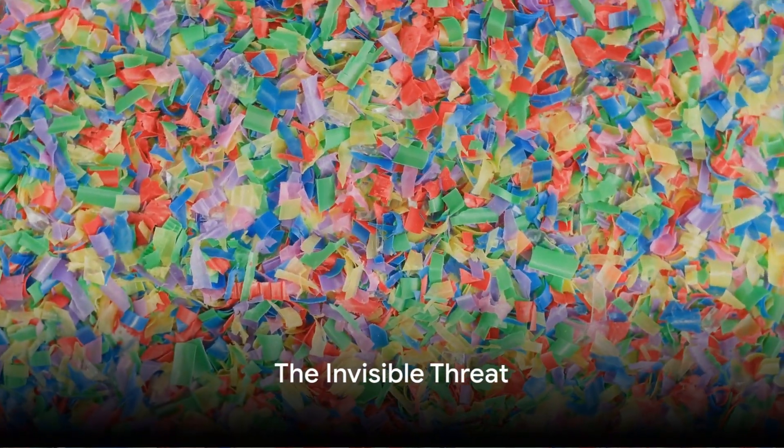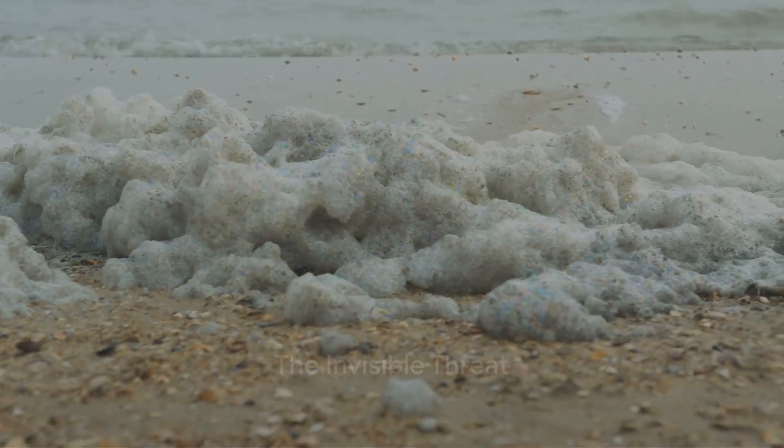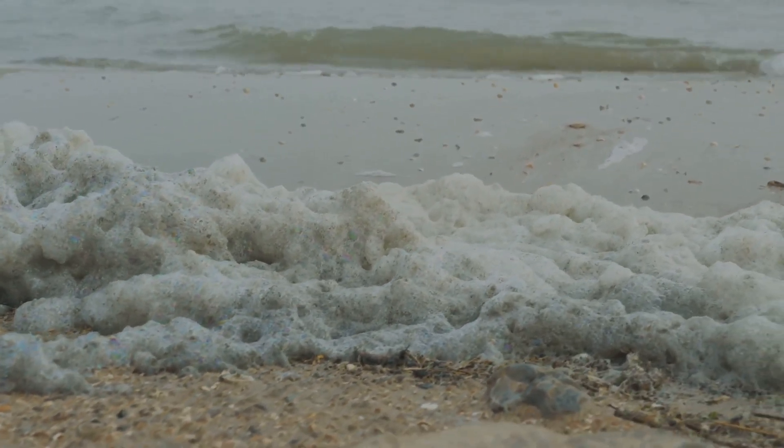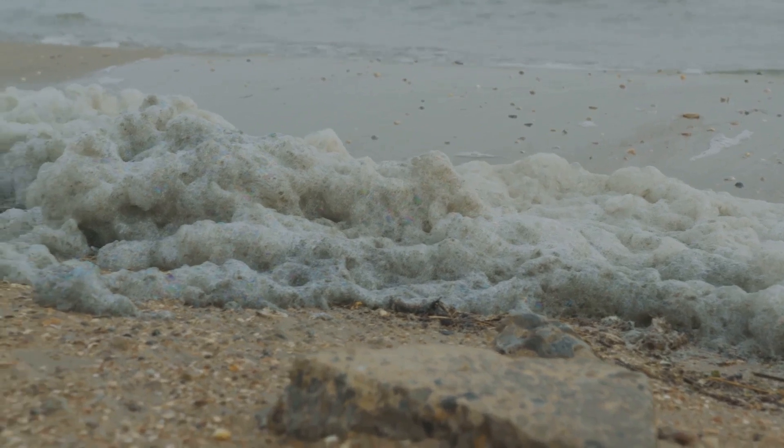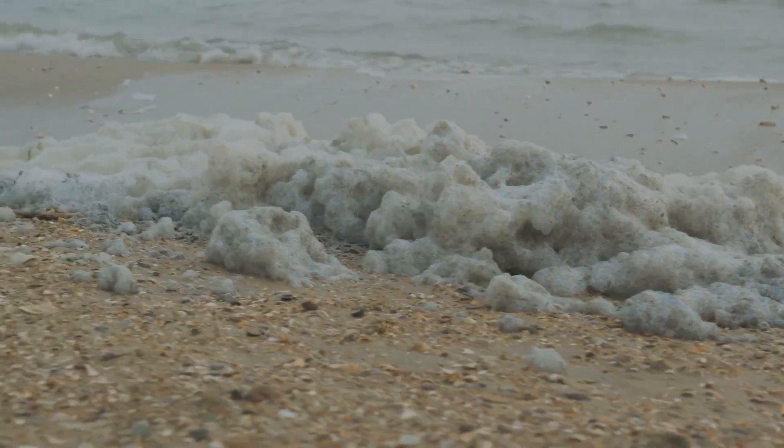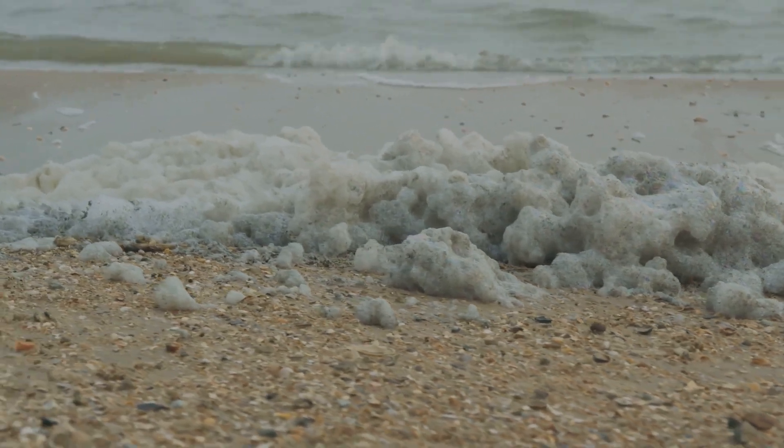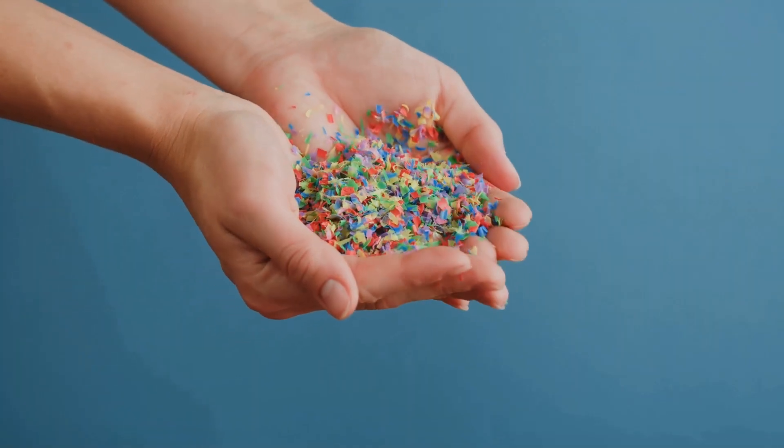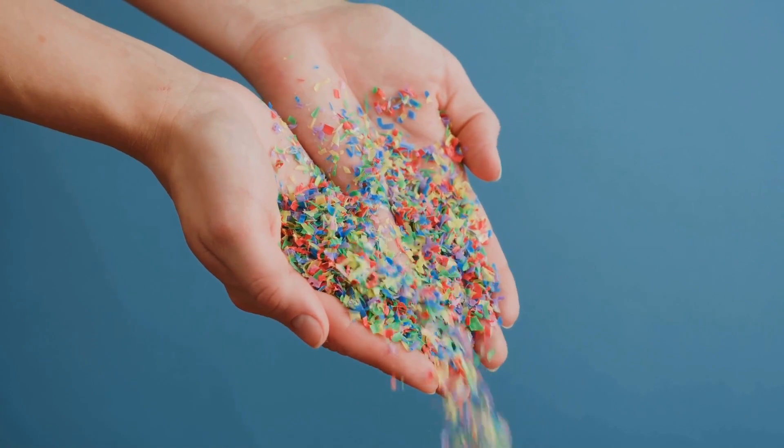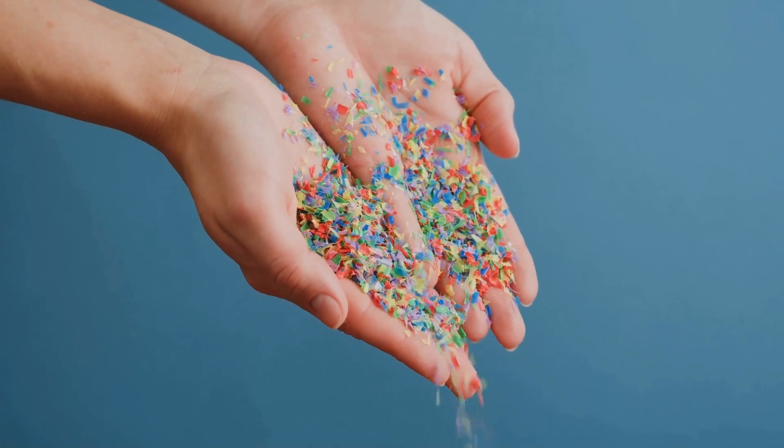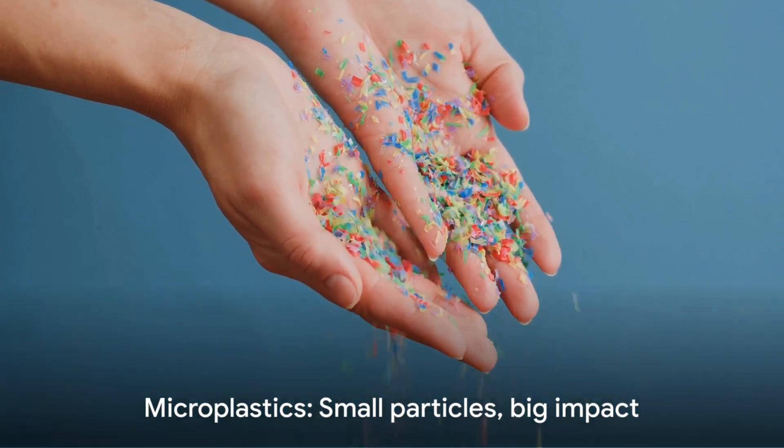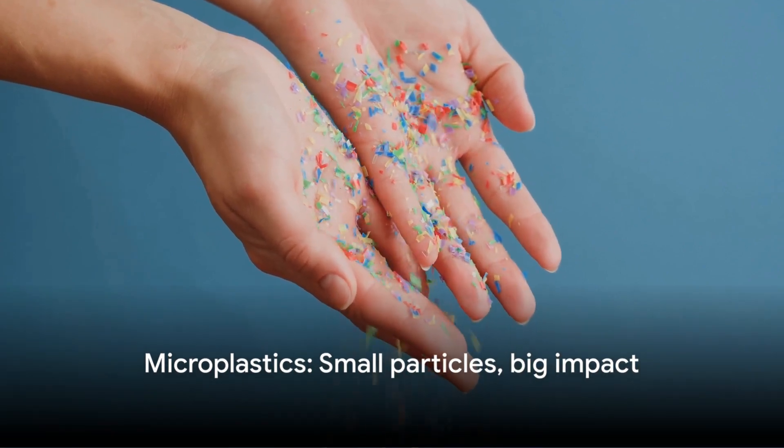What do your clothes and oceans have in common? Microplastics. These teeny tiny particles, often invisible to the naked eye, are everywhere. From your favorite fleece jacket to the deep sea, they're causing a big stir in the world of science. These minuscule menaces can harm our marine life and even end up in our food. Yet scientists are working tirelessly to find solutions to this pervasive issue. Microplastics. A tiny problem with a gigantic impact.